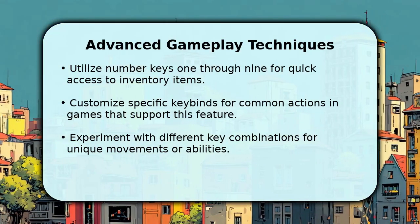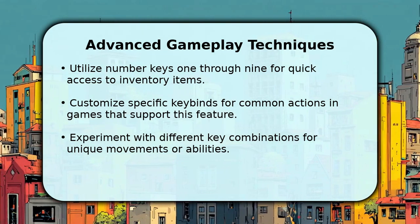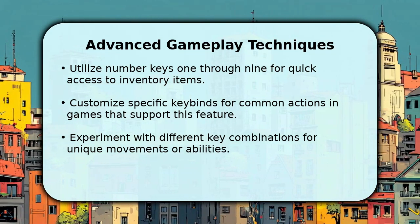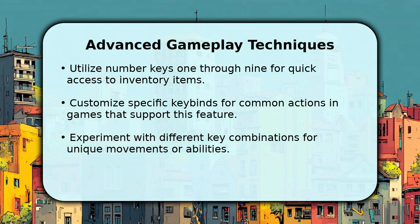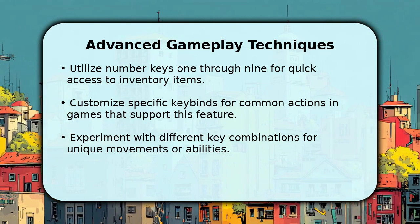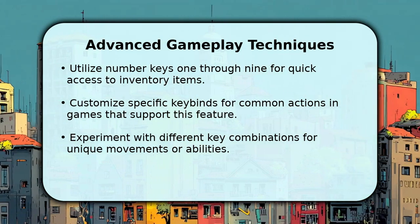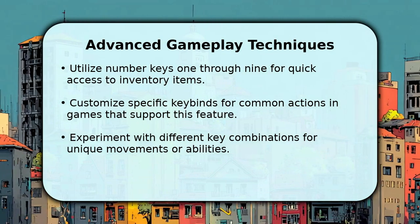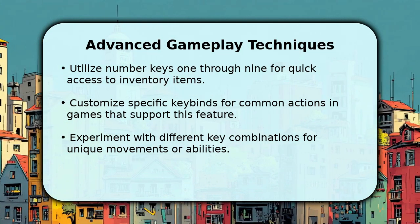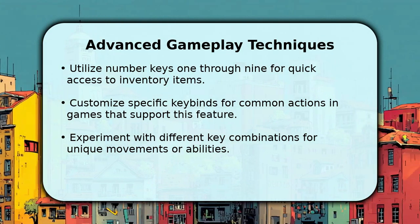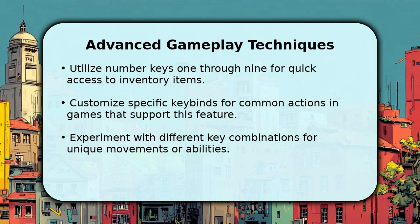To elevate your Roblox gameplay, explore advanced keyboard techniques. Many games let you quickly select inventory items by pressing the number keys, from 1 to 9, on your keyboard. Some experiences offer customizable keybinds within their individual settings, allowing you to tailor specific actions to your preferred keys. Additionally, holding down the Shift key while moving often enables your character to sprint, giving you a speed advantage.